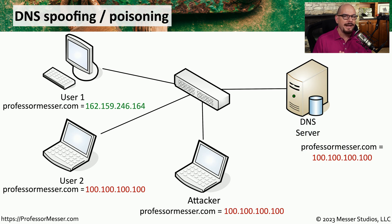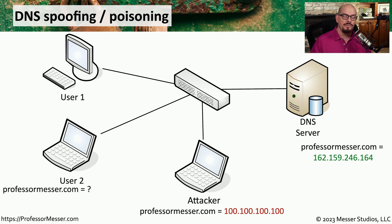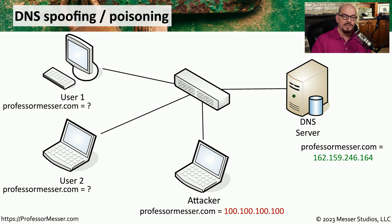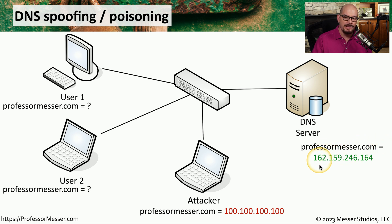Let's look at an example of when an attacker can gain access to the DNS server to modify that DNS configuration. Here's how DNS poisoning using IP spoofing is able to redirect traffic. We have an attacker on this network with an IP address of 100.100.100.100. We also have a DNS server with an IP address of 162.159.246.164, and two users on the network that need to query for professormesser.com. A normal DNS query without any attacker in the middle would occur from User 1, who talks directly to the DNS server and queries for professormesser.com. That DNS server has a record indicating that professormesser.com resolves to the IP address ending in .164, and it sends that answer back to User 1.